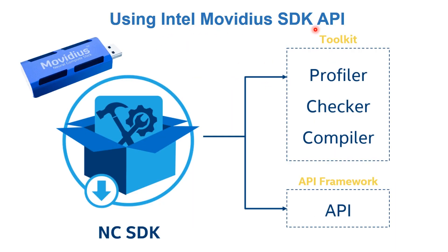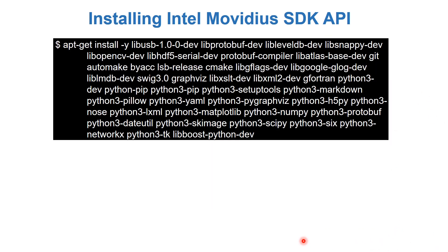To use the Intel Movidius SDK, you can do two things: use the stick to train your own data using various methods, which requires Ubuntu or a virtual machine and a dedicated computer — you can't do it on a Raspberry Pi. We're not going to do that. Instead, we'll just compile the API interface, use a pre-compiled trained neural network, and send our input data to the neural stick, which computes and gives us the desired output.